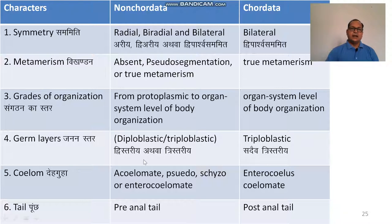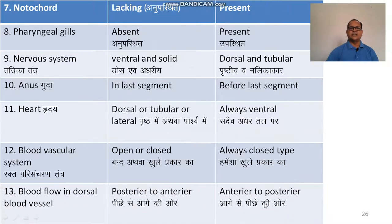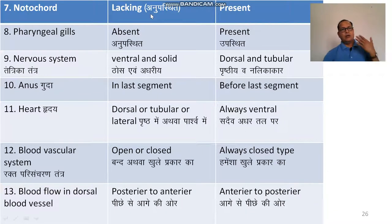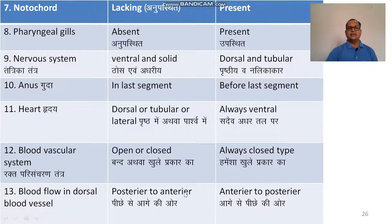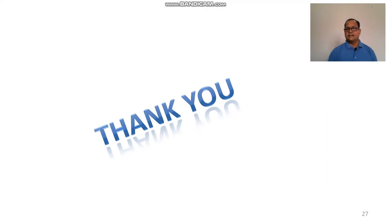Regarding the tail, non-chordates have a pre-anal tail whereas chordates have a post-anal tail. Pharyngeal gills are absent in non-chordates but present in chordates. The notochord is lacking in non-chordates but present in chordates. The nervous system and heart vascular system are lower in complexity in non-chordates and higher in chordates.